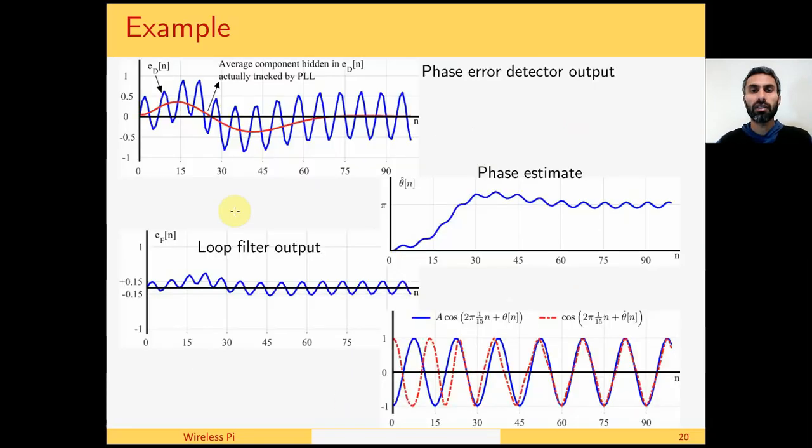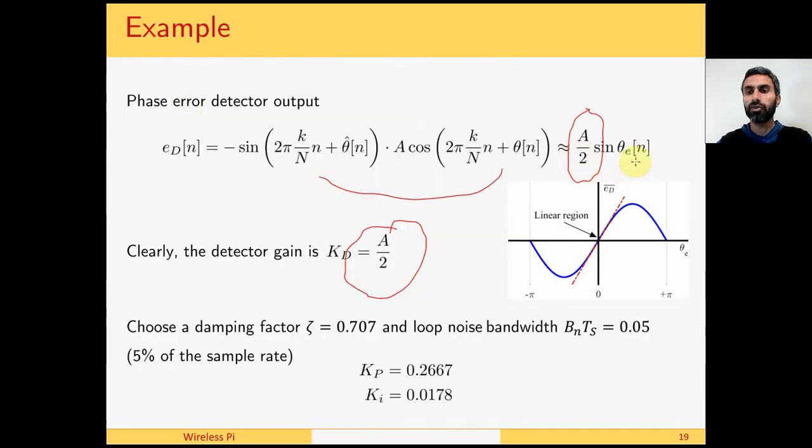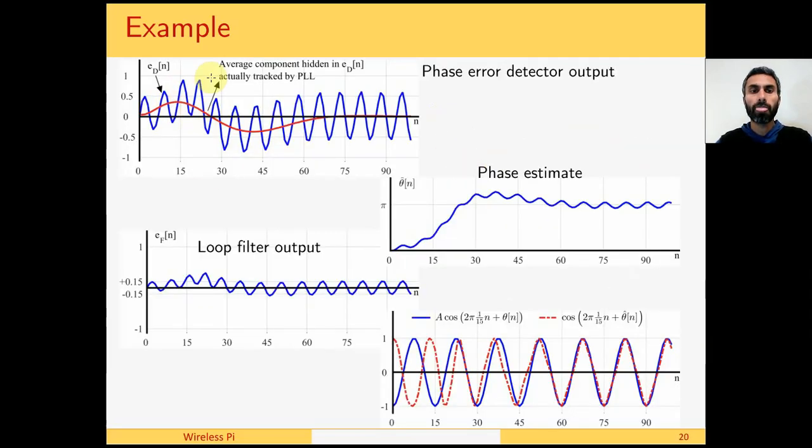Let us see what happens when we plot the signals which are relevant at each stage. Phase error detector output e[n] is given by this blue curve. And we can see that there is an average component hidden. This red component is the a over 2 sin theta_e. And we have chosen a as 1. And the double frequency term is riding over the average curve. This is the phase error detector output.